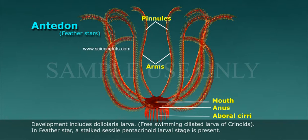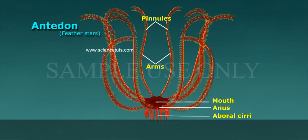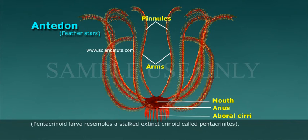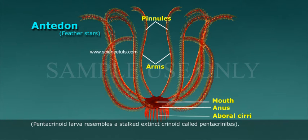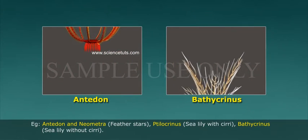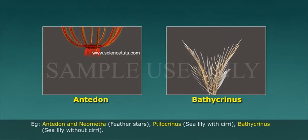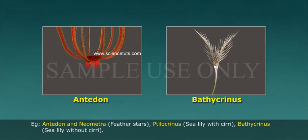In the feather star, a stalked sessile pentacrinoid larval stage is present. The pentacrinoid larva resembles a stalked extinct crinoid called Pentacrinites. For example, Antedon and Neometra are feather stars.